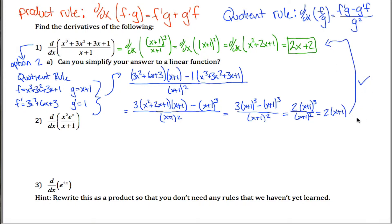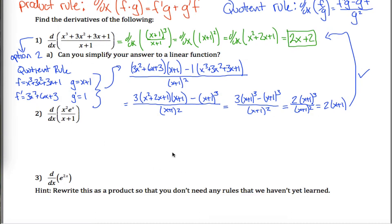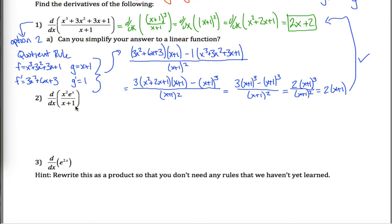I'm happy. I did this problem two different ways. Moving on to the next one: x squared e to the x divided by x plus 1. I don't know if there are any great tricks for this one — it's just a nasty, ugly problem. You look at it, it's something divided by something else, so I'll use the quotient rule.